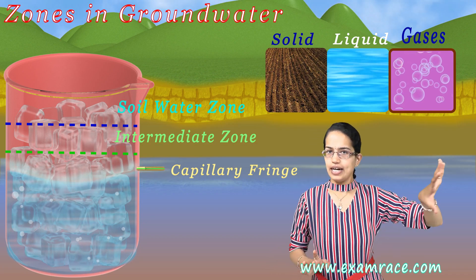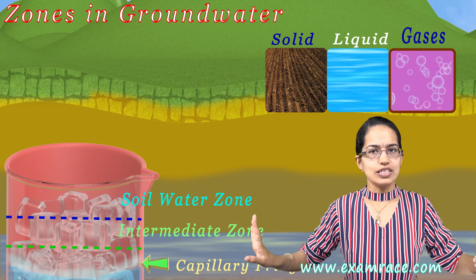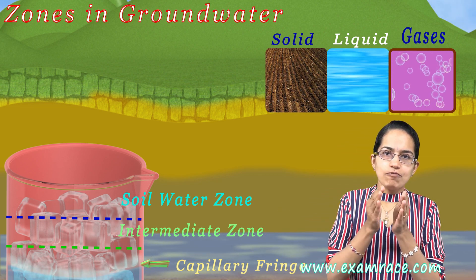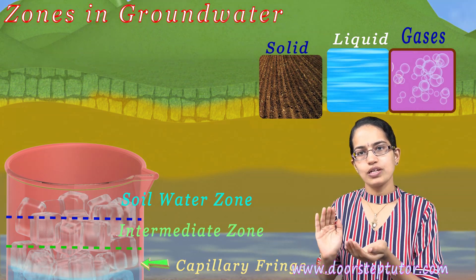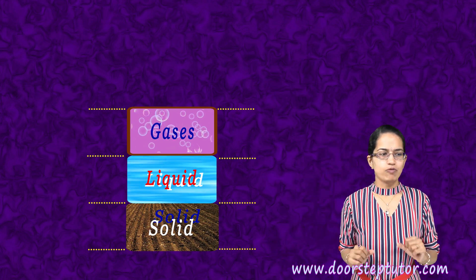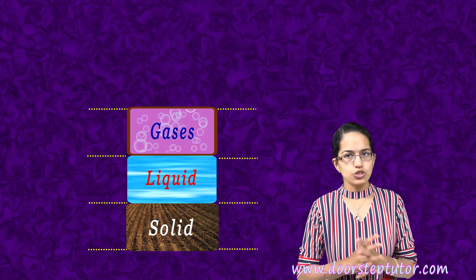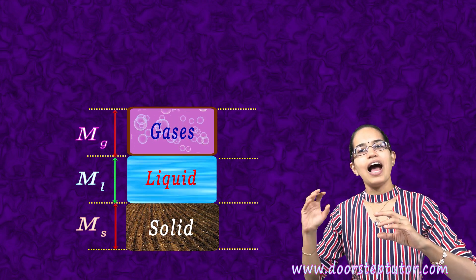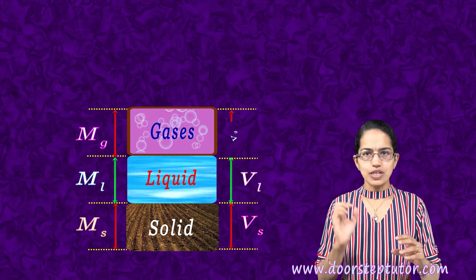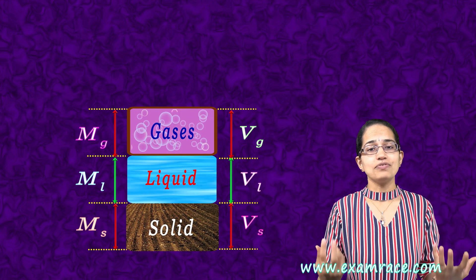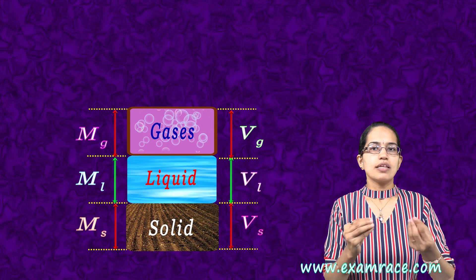Now we are focusing on only the unsaturated zone, setting aside the saturated zone for now. The unsaturated zone can be further separated into the solid layer, the liquid layer, and the gaseous layer. So I have the different volumes as well as the mass of each — the mass of the solids, the mass of the liquids, and the mass of the gas. Similarly, I have the volume of the solid, the volume of the liquid, and the volume of the gas. With all this information, I can have certain formulas that help me solve the basics.